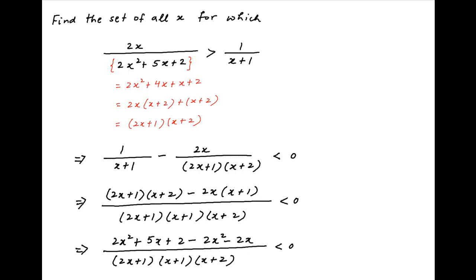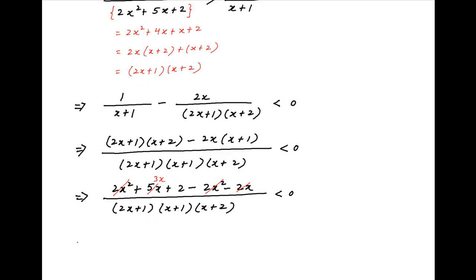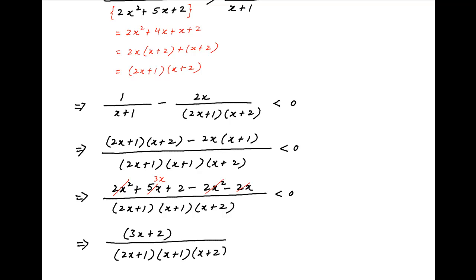In the numerator, 2x squared cancels and the remaining terms simplify to 3x plus 2. Therefore, this inequality reduces to (3x plus 2) divided by (2x plus 1)(x plus 1)(x plus 2) is less than 0.